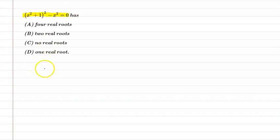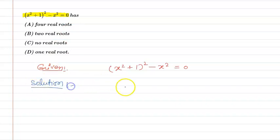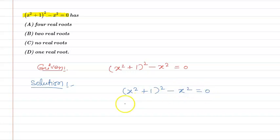So let's start. First of all, write down the given information. Given: (x² + 1)² - x² = 0. Now let's move on to the solution part. We have (x² + 1)² - x² = 0.